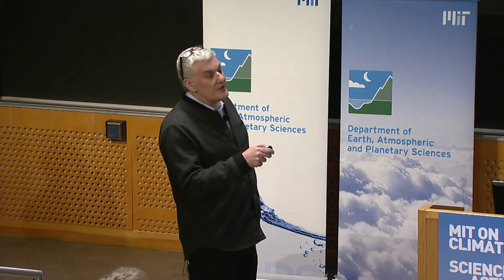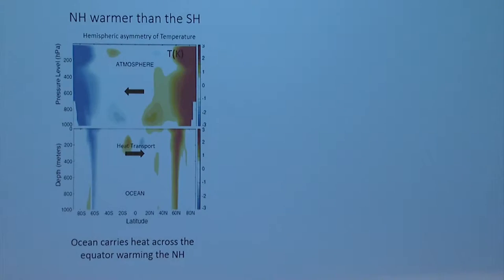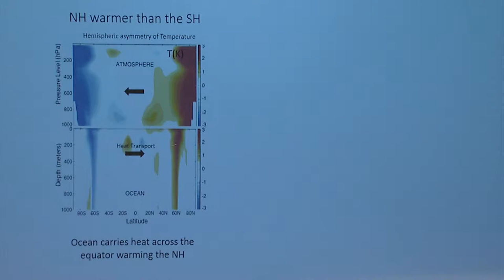You can see that the northern hemisphere troposphere is two or three degrees warmer than the southern hemisphere troposphere. The northern hemisphere ocean is slightly warmer than the southern hemisphere ocean. What we know is happening is that the ocean is actually carrying heat from the southern hemisphere into the northern hemisphere, warming up the northern hemisphere troposphere. The ocean carries heat across the equator, warming the northern hemisphere.